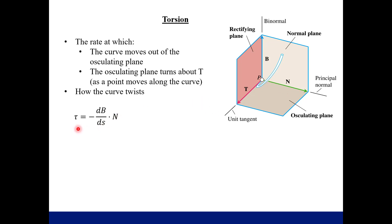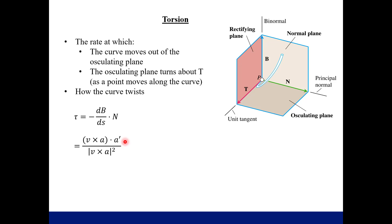Here is the formula for torsion, denoted by the Greek letter tau. It's the negative of the derivative of the unit binormal vector with respect to arc length s, dotted with N. So you find your binormal vector, differentiate it with respect to arc length, then dot with N. If the curve is not parameterized by arc length, we have alternate formulas. One alternate formula uses the cross product of velocity and acceleration, dotted with the derivative of acceleration (which is called jerk — the rate of change of acceleration), divided by a magnitude squared.